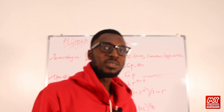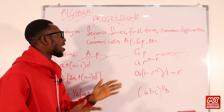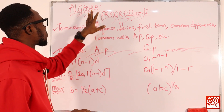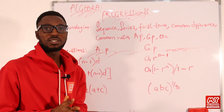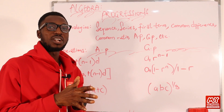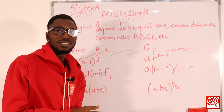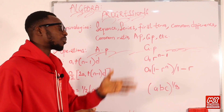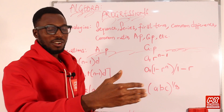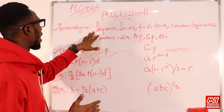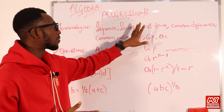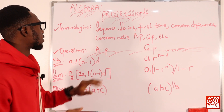Welcome back to my school YouTube learning channel. We have the topic progressions on the algebra. So first, what are progressions? Typically we can use the words interchangeably — you can use the word pattern, you can use the word sequence to replace progression. So we are just looking at something that follows a particular rule. So how would you describe or define these terminologies? We have sequence, series, first term, common difference, common ratio, AP, GP and the like.